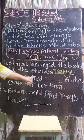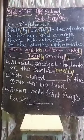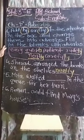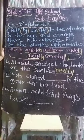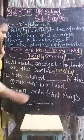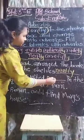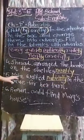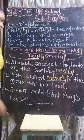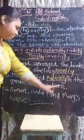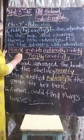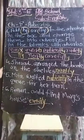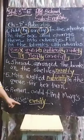Fifth one: 'Meeta waited in the queue for her turn' — वो patient होके wait कर रही थी, so we add L-Y: 'patiently'. Sixth one: 'Roman could find Mary's house easily' — यहाँ Y निकालके I-L-Y add करना है: E-A-S-I-L-Y, 'easily'.